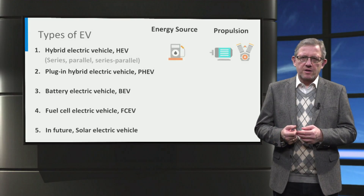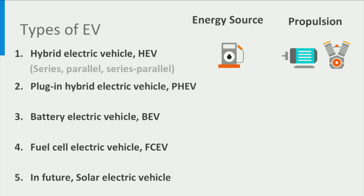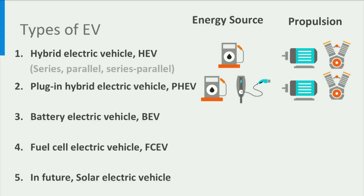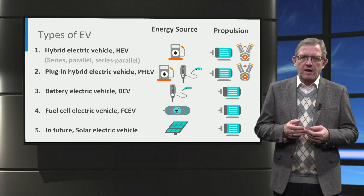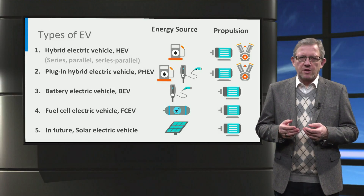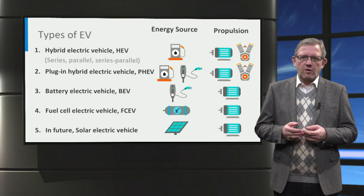The hybrid electric vehicle sources its energy solely from gasoline or diesel, while it uses both the electric motor in combination with the battery and a combustion engine for propulsion. The plug-in hybrid electric vehicle is similar in that it uses both an engine and an electric motor for propulsion. The difference is that the battery of a plug-in hybrid electric vehicle can be charged by electricity via a charging port. In contrast, the battery electric vehicle does not have an engine and is purely powered by electricity. Finally, in the case of a fuel cell and solar electric vehicle, the energy is directly sourced from hydrogen using a fuel cell or from solar panels respectively, while the propulsion is done using an electric motor. Now, let's look at these vehicles one by one.